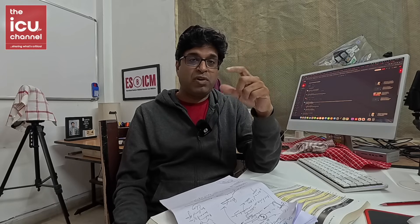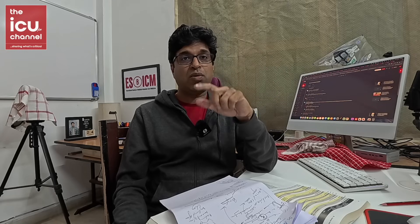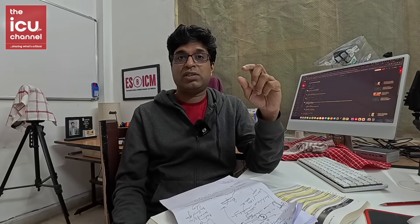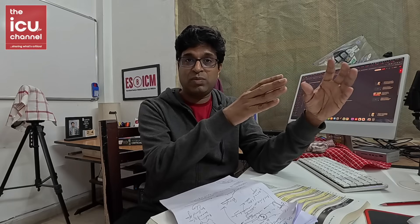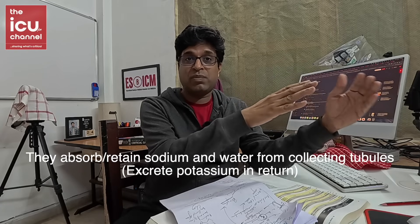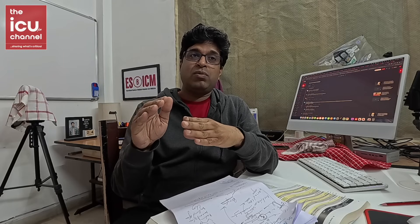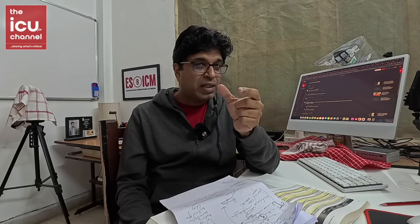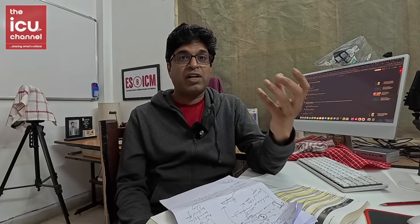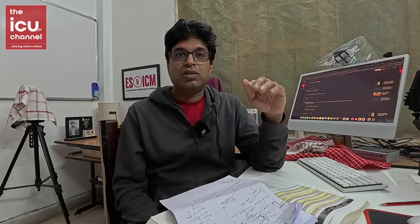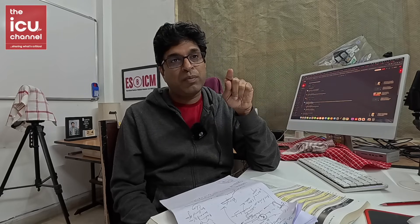The innermost reticularis secretes adrenal androgens, which are also not of concern for today's lecture. So only two layers remain which secrete the corticosteroids: the glomerulosa and fasciculata. Corticosteroids are divided into two types based on their activity — mineralocorticoids and glucocorticoids. Mineralocorticoids are mainly concerned with managing minerals: sodium, potassium, and water. The top layer, glomerulosa, secretes the mineralocorticoid aldosterone, and the middle layer, fasciculata, secretes cortisol, the glucocorticoid.